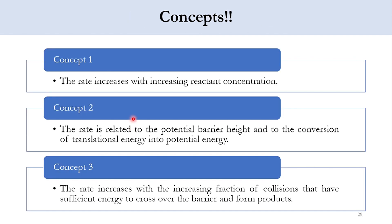There are three concepts which need to be considered while discussing the rate law and building block number 2. Concept number 1 is that the rate increases with increase in concentration of the reactants. We have seen the rate equation as minus rA equals K times CA, where A is a reactant. So minus rA and CA are directly proportional.